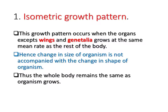We start with the isometric growth pattern. 'Iso' means the same while 'metric' means the measurement. This growth pattern occurs when the organs, except wings and genitalia, grow at the same rate as the rest of the body. By doing so, the change in the size of the organism is not accompanied by a change in the shape of the organism.